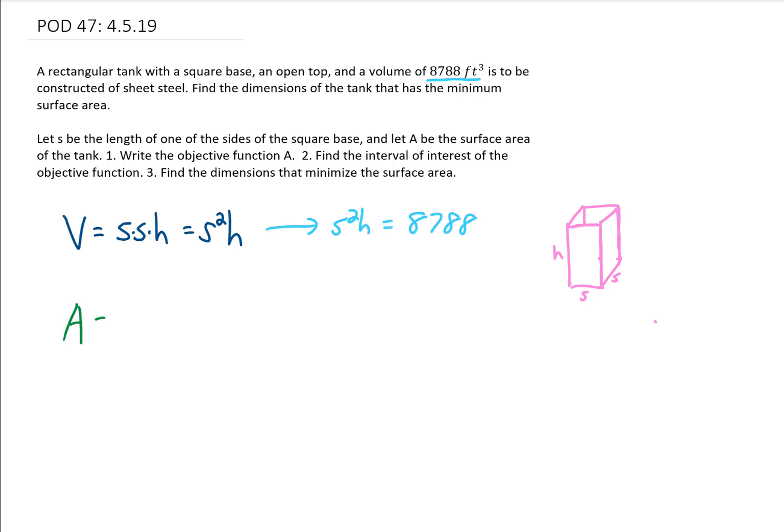Our tank has a surface area as well. The area of the base of this tank is just S times S or S squared. Remember there's no top. Then there are four sides of this tank that are all the same. Each side has an area of S times H. So the combined area of all four sides is 4SH.